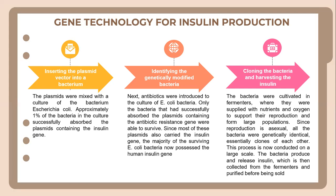The final stage is cloning the bacteria and harvesting the insulin. The bacteria were cultivated in fermenters where they were supplied with nutrients and oxygen to support their reproduction and form large populations. Since reproduction produces genetically identical offspring, all the bacteria are essentially clones of each other. This process is now conducted on a large scale. The bacteria produce and release insulin, which is then collected from the fermenters and purified before being sold.